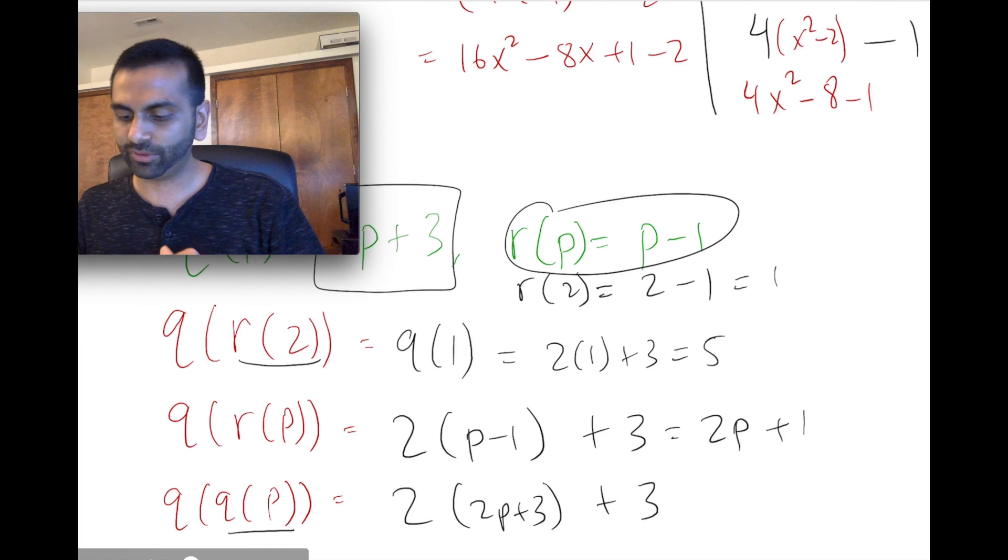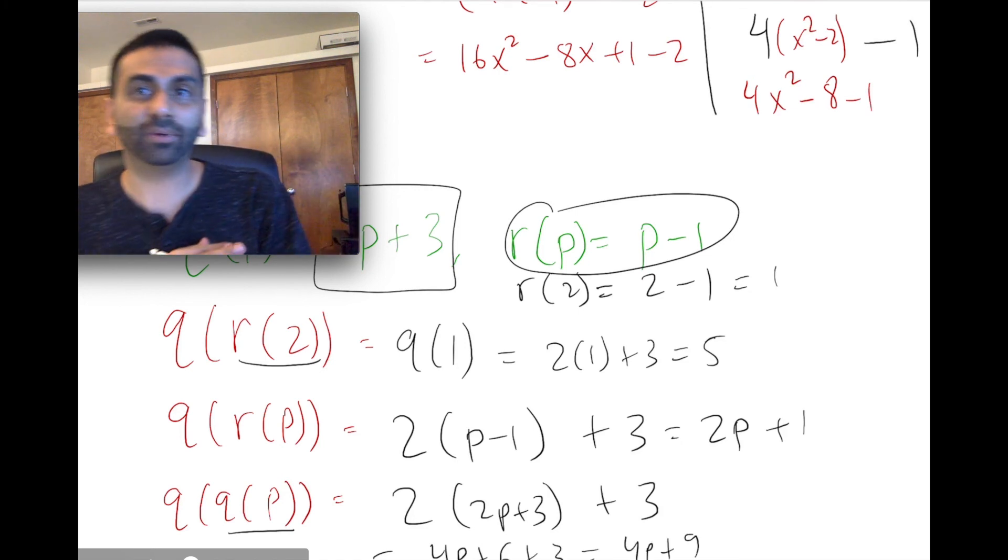And of course, you could simplify that. Distribute the 2, you get 4p plus 6 plus 3, which would be 4p plus 9. So that's how you deal with composite functions.